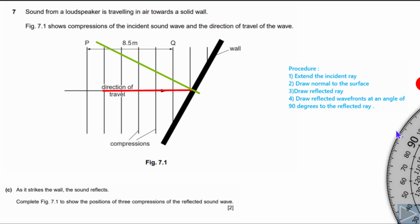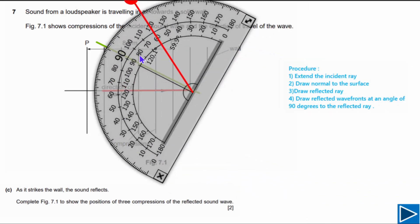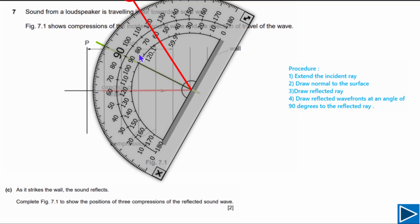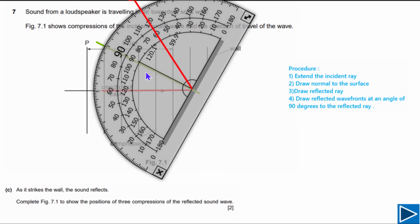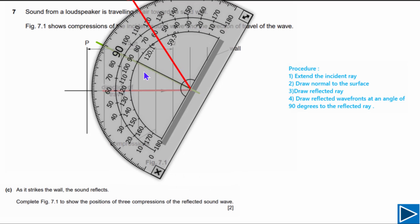For step three, draw the reflected ray. Place the protractor to measure the angle of incidence. The angle of incidence is 30 degrees, so the angle of reflection is also 30 degrees. Measure 30 degrees on the other side of the normal and draw the reflected ray.